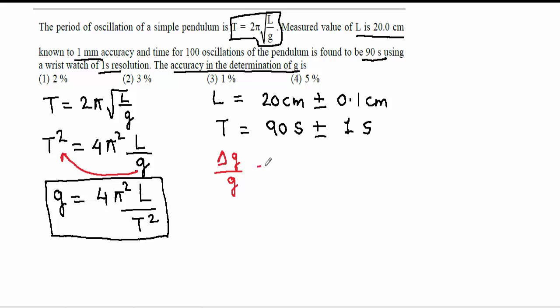That says Δg over g equals, 4π² is a constant value so it has no error. And for L we will write Δl over l, plus for T, ΔT over T. T has power of 2, so it would be multiplied by 2.